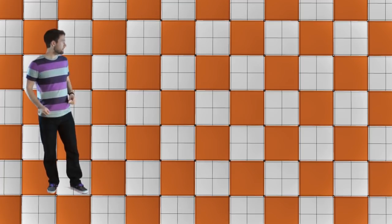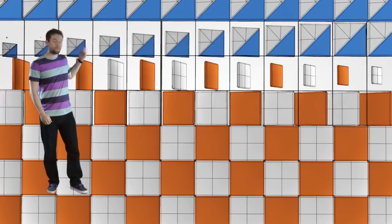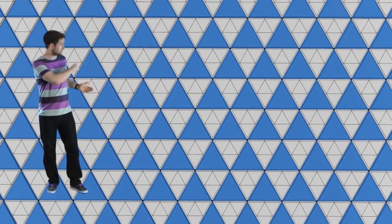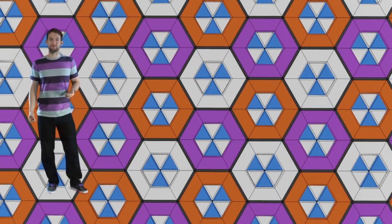But when you break those squares in half, like so, you get right triangles. Now those can be morphed into equilateral triangles. Bunch those up six at a time, and you got yourself some hexagons.